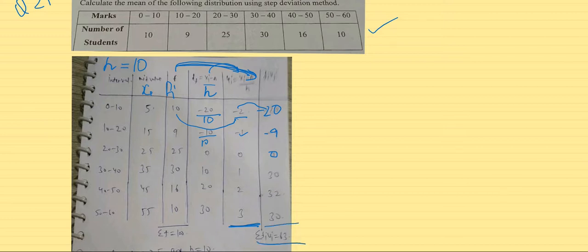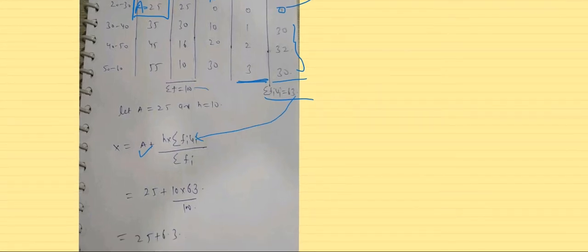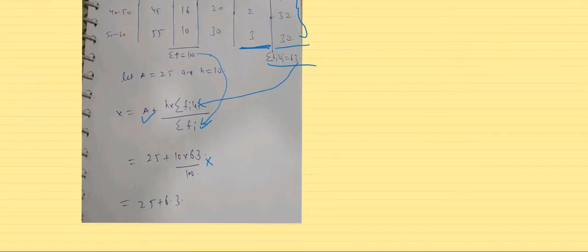Now we have to take the total. Summation fi ui. Do negative numbers separately and positive numbers separately. So that comes to be 63. Now we will use the formula. In this also, we took an assumed mean. What is our assumed mean? Yes, we have to write that. You have to keep that in mind. Assumed mean has to be written like this. It should be written in the data as well. So A which was 25, summation fi ui total was 63, and summation fi is 100.